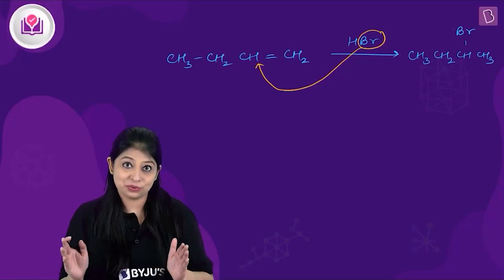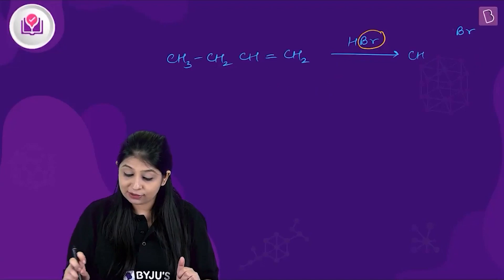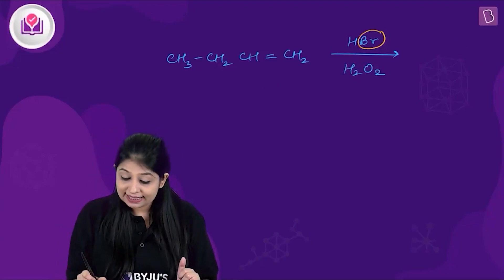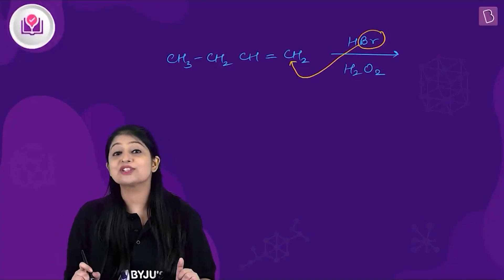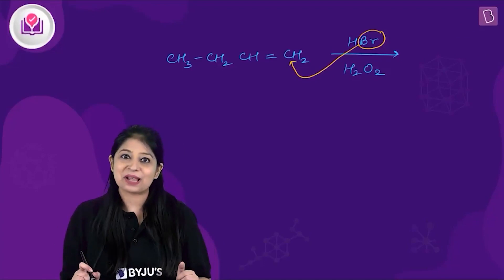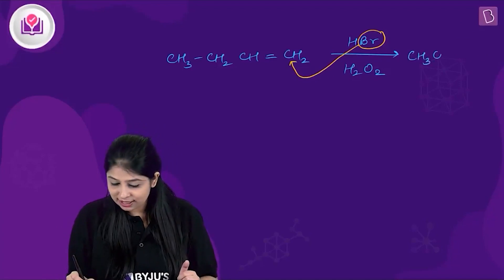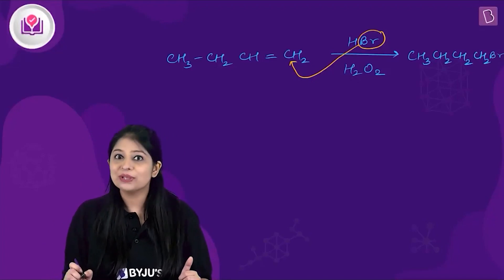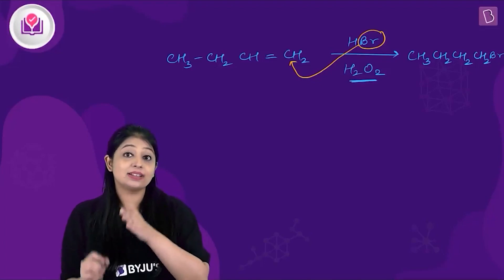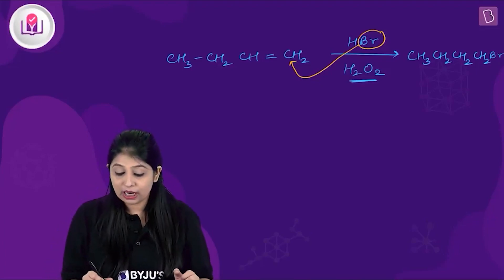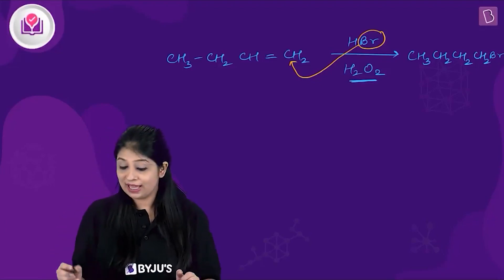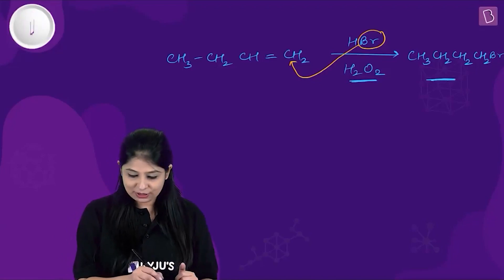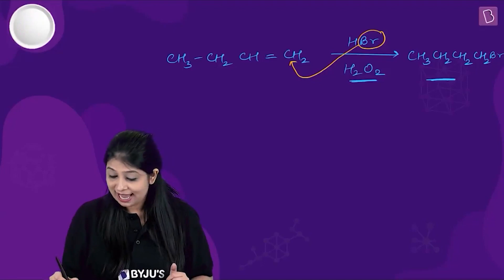However, we do have hydrogen peroxide present. In the presence of H₂O₂, the negative part of the addendum gets added to the doubly bonded carbon atom which has more hydrogen atoms attached to it. The product is CH₃CH₂CH₂CH₂Br, which is 1-bromobutane. This is called the anti-Markovnikov product, and this effect is known as the peroxide effect.